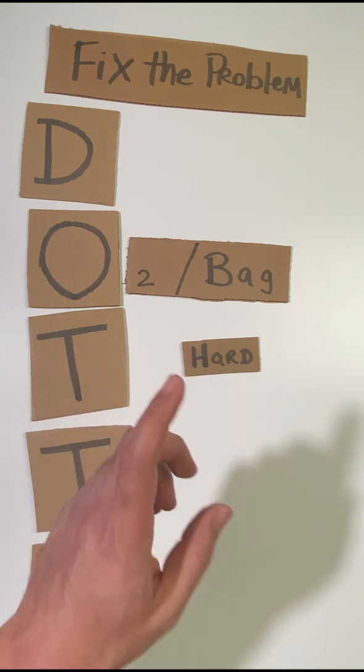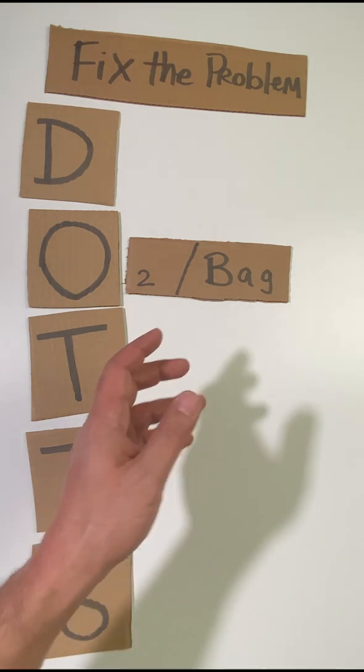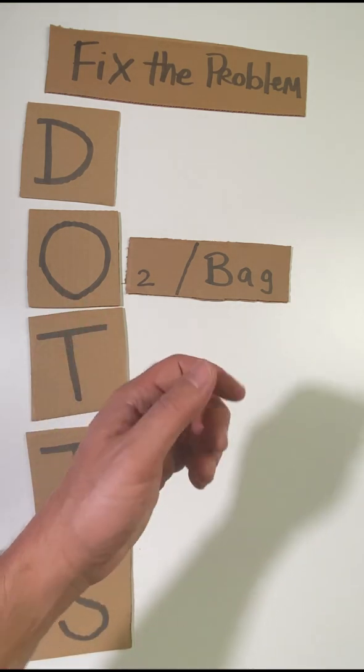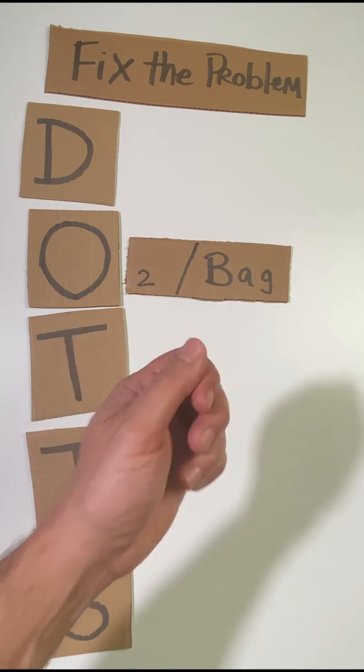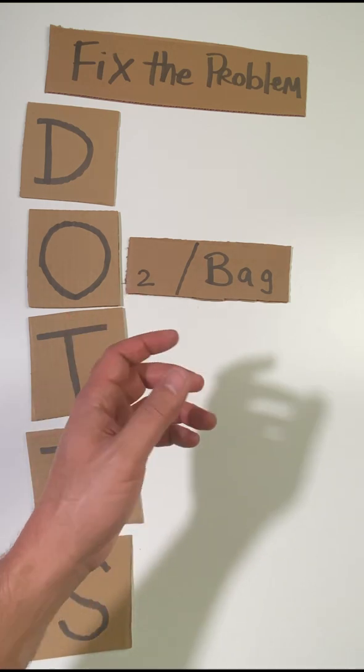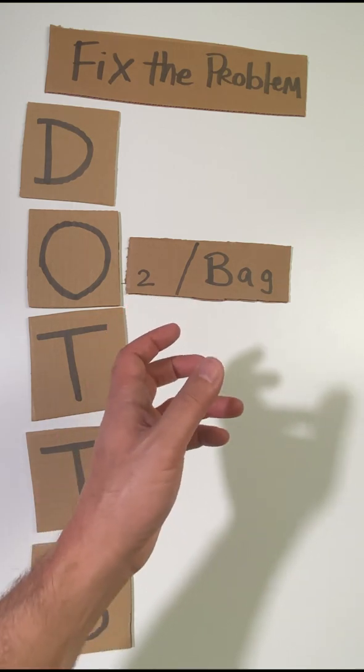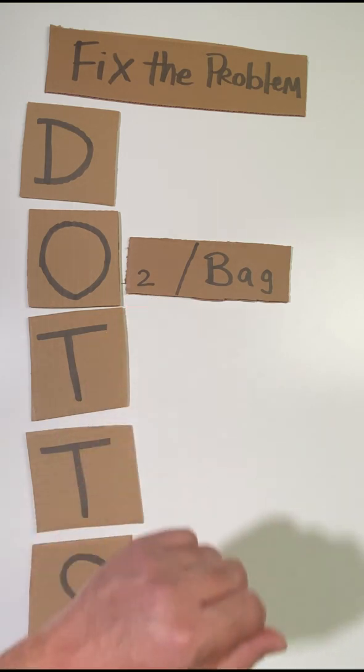One more thing that you might want to do is as you're bagging them, go ahead and feel that pilot balloon just to make sure that it's fully inflated. If it's deflated, then you think about a leak in the system, and maybe that endotracheal tube has a leak in it and that's why it's not creating a tight seal in the trachea.